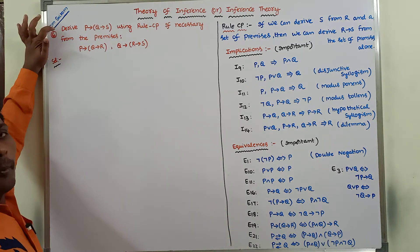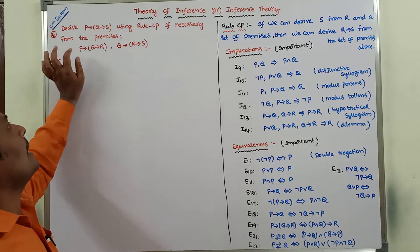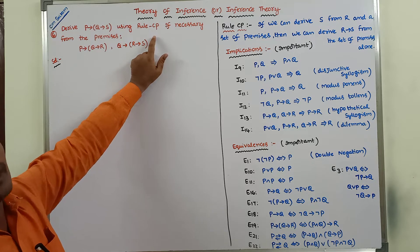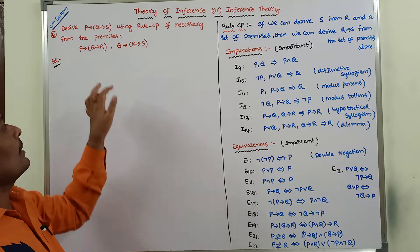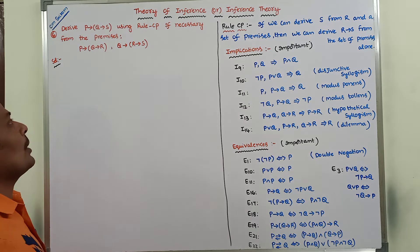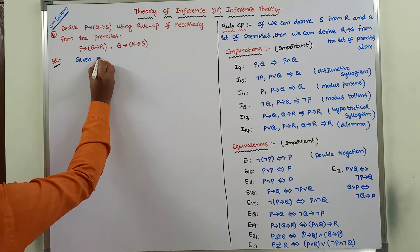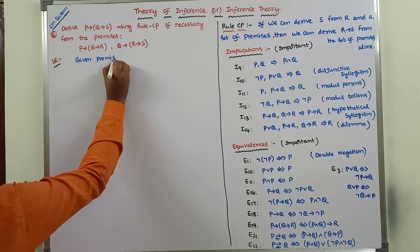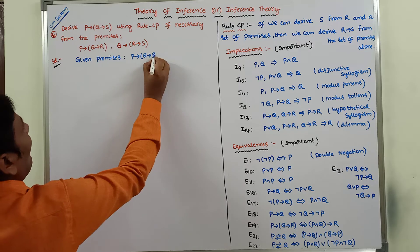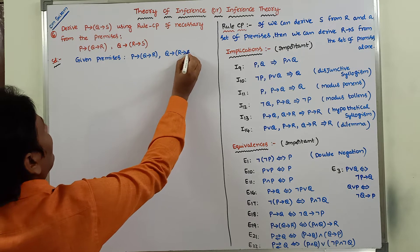So, derive P conditional Q conditional S using Rule CP if necessary from the premises. Whenever Rule CP is required, we have to use Rule CP for the given premises and derive the conclusion P conditional Q conditional S. The given premises are P conditional Q conditional R, and Q conditional R conditional S.